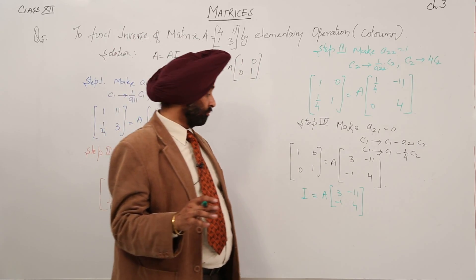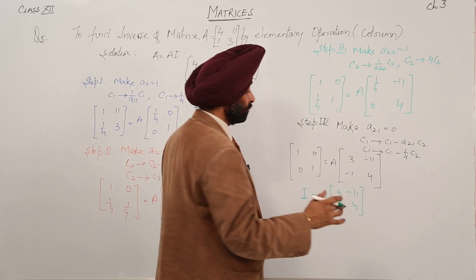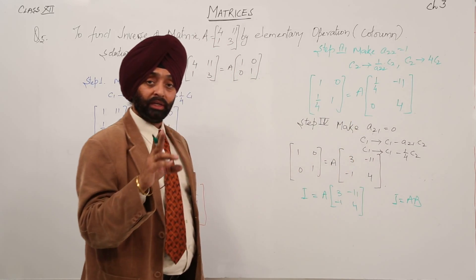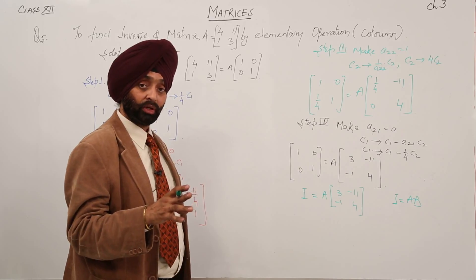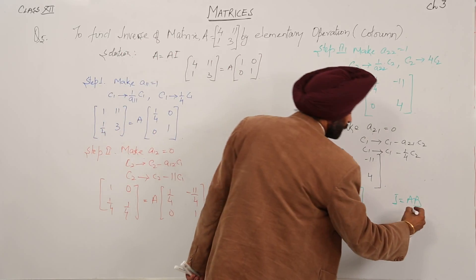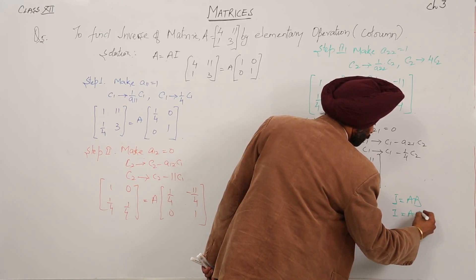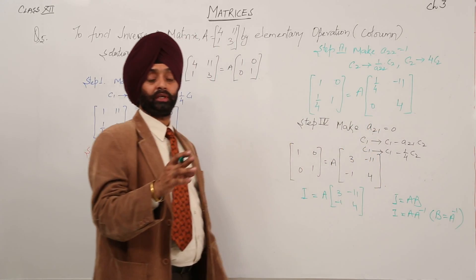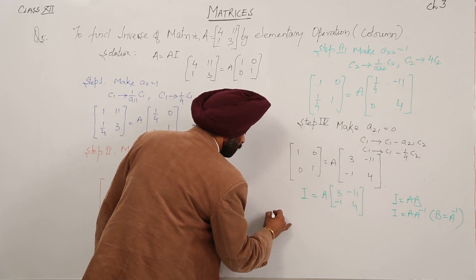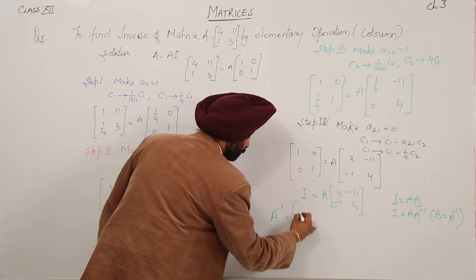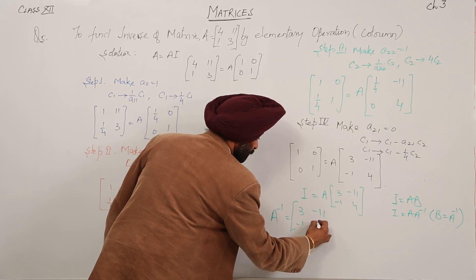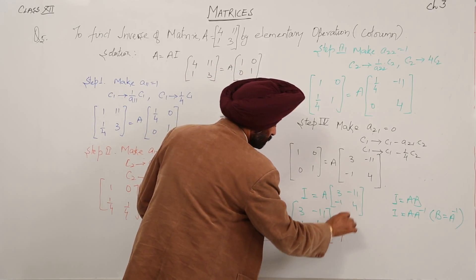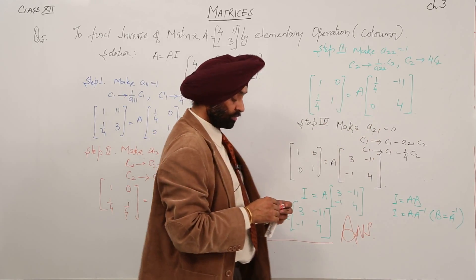Now, from the property: if I = A·B, then B is the inverse of A. So we can write I = A·A⁻¹, where B = A⁻¹, and A times A⁻¹ is the identity matrix. Therefore, A⁻¹ = [3, -11; -1, 4]. This is our answer.